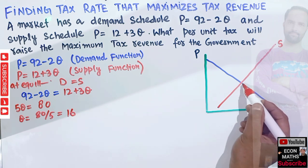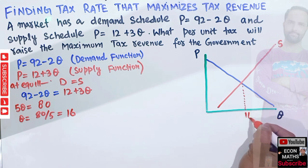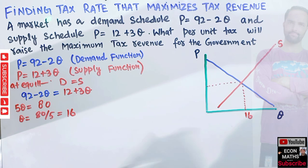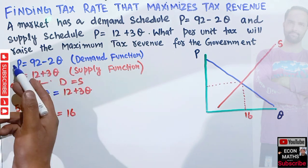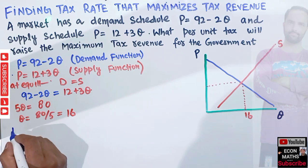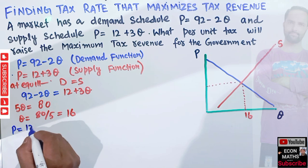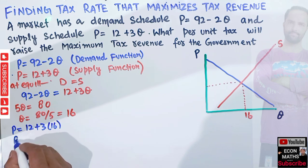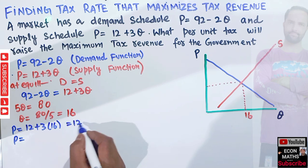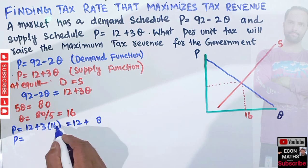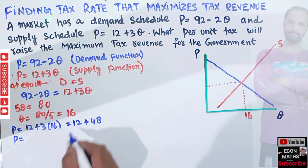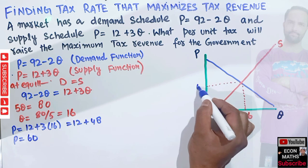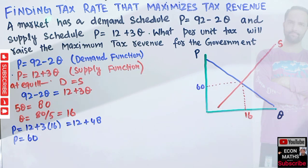The quantity demanded at equilibrium is 16. To find the equilibrium price before the imposition of the per-unit tax, we substitute Q = 16 into the supply function: P = 12 + 3(16) = 12 + 48 = 60. So before the tax, the equilibrium price is 60.